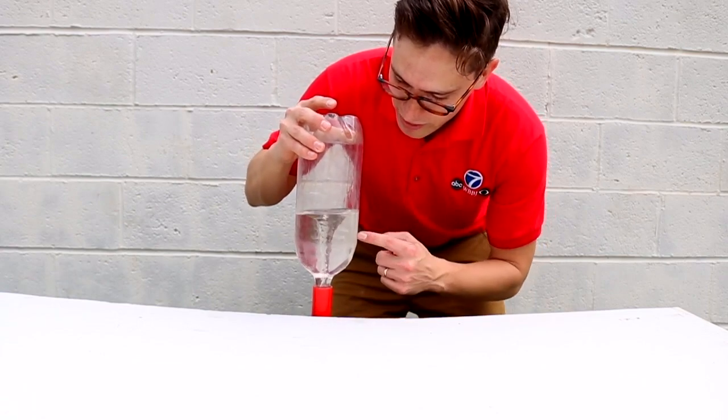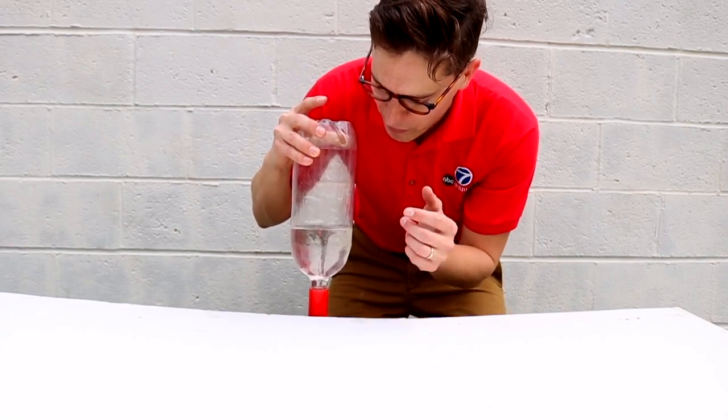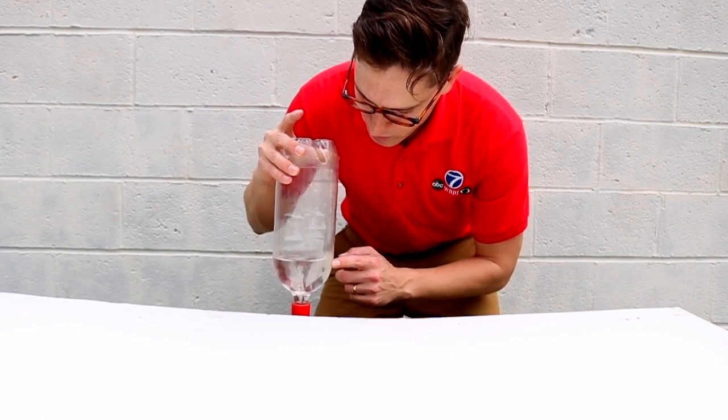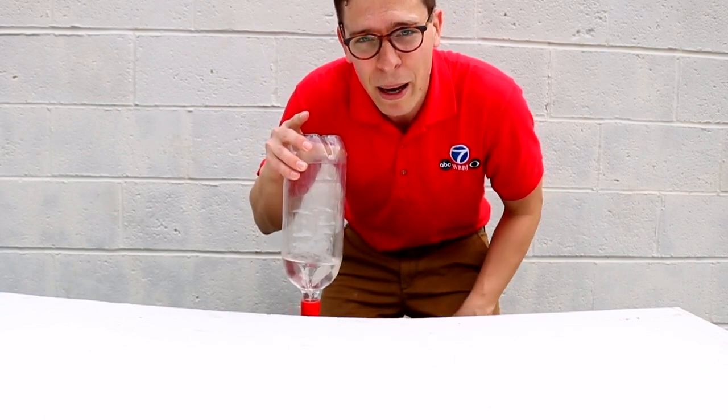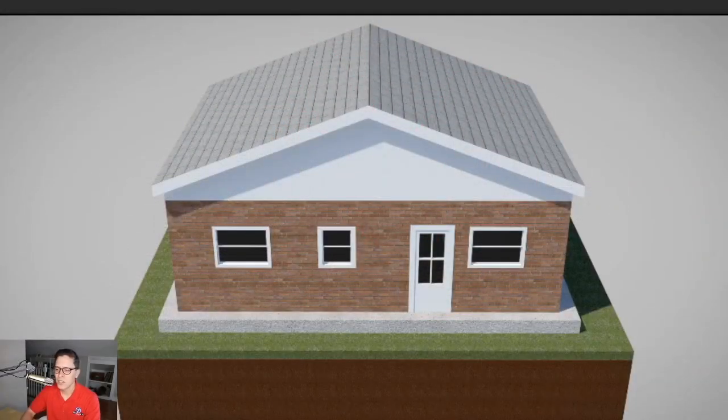Now most tornadoes in West Tennessee don't look like this. They're completely wrapped with rain, so they're very difficult to see. And most also happen at nighttime. But most usually last about this long. Sometimes seconds, maybe some for a few minutes.